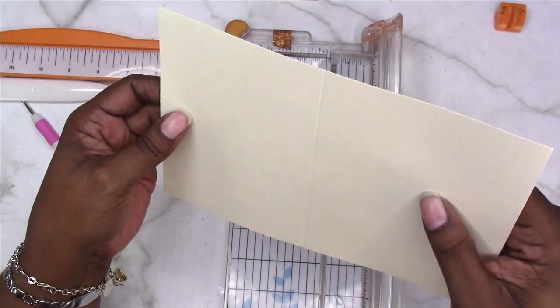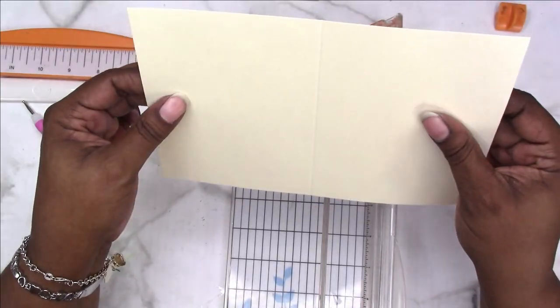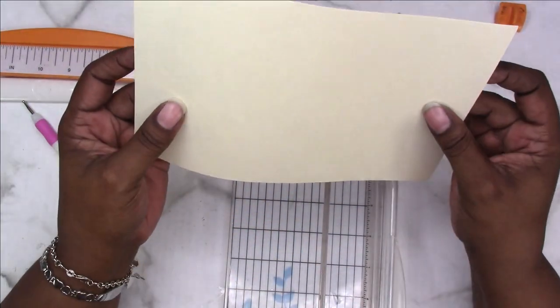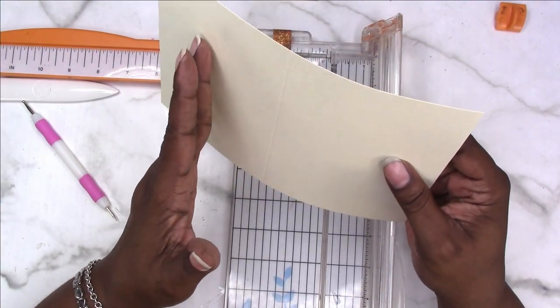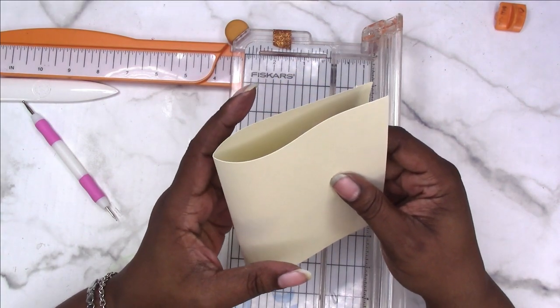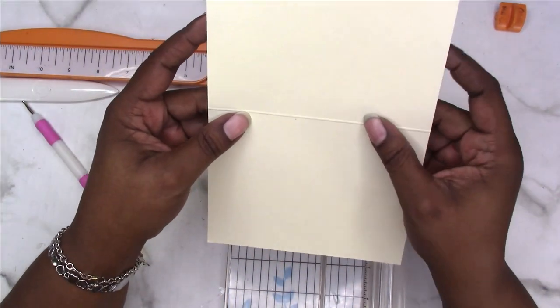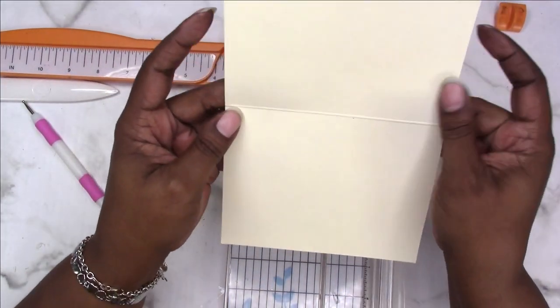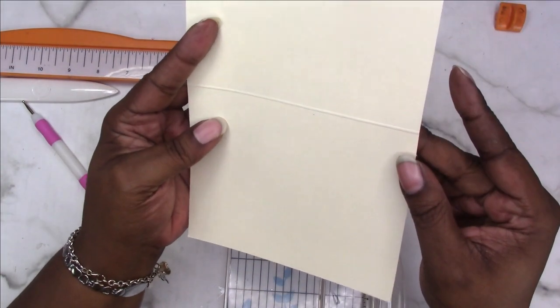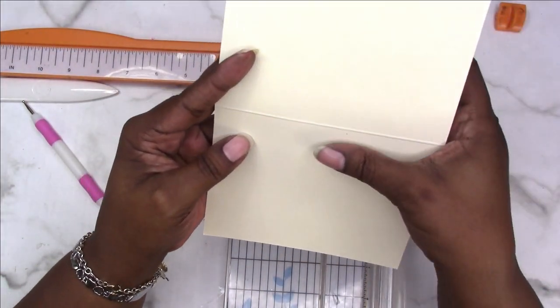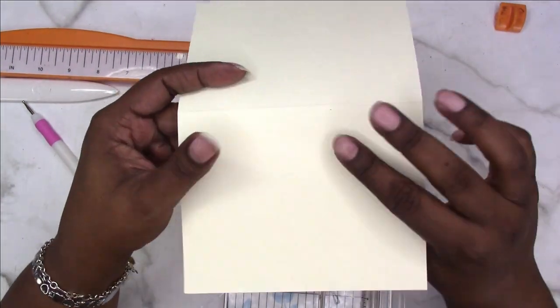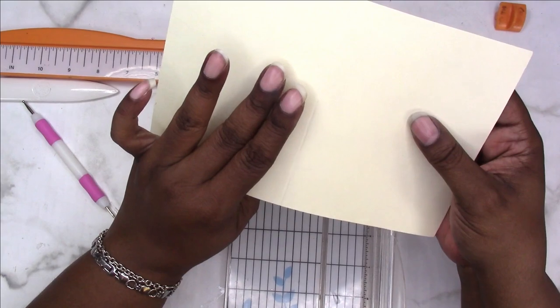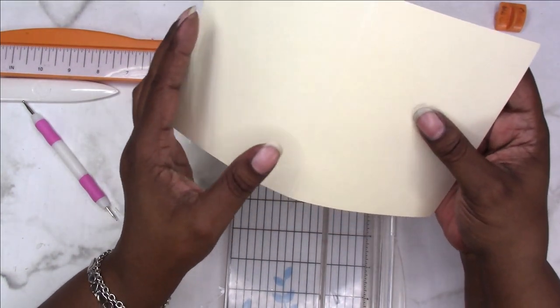When you're scoring, you need to score on the side that you want to fold over. You would think that because this side is embossed—you see how the score is raised—that you would fold according to that raise. But that's not the case. You want to fold against the raise, so we fold on the side where the indention was made.